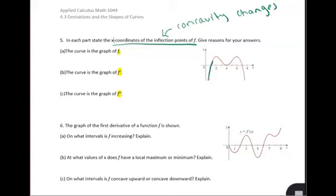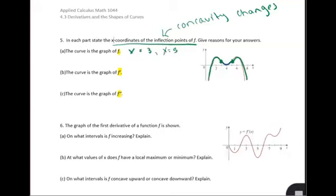So right here it looks like it is concave down, and right here it looks like it is concave down. So it looks like we have two inflection points if this graph is our original function, and they will be at x equals 3 and x equals 5. Our reason is that's where the concavity changes on the original function.